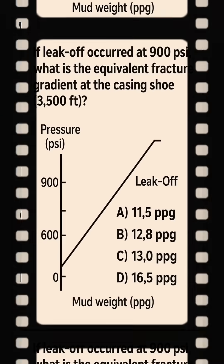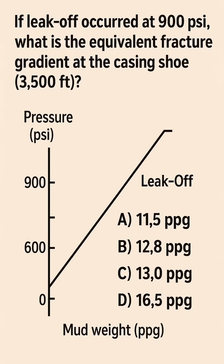Question 2: If leak-off occurred at 900 psi, what is the equivalent fracture gradient at the casing shoe at 3,500 feet? A. 11.5 ppg. B. 12.8 ppg. C. 13.0 ppg. D. 16.5 ppg.